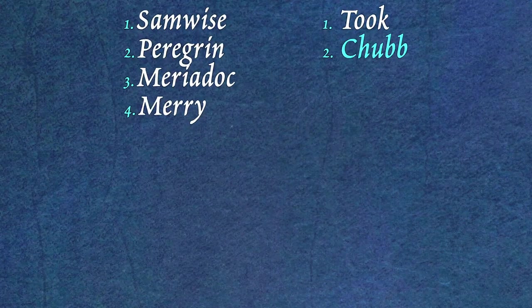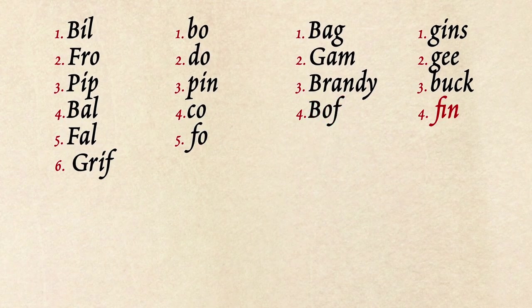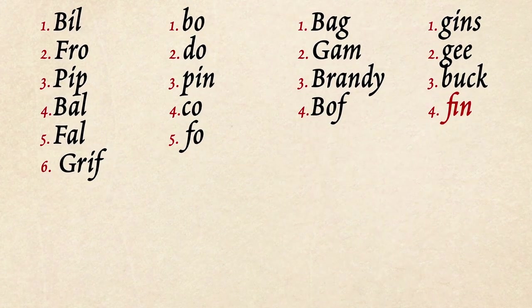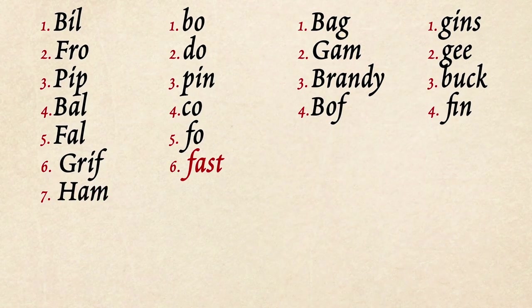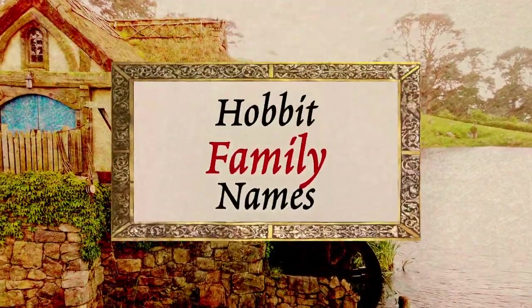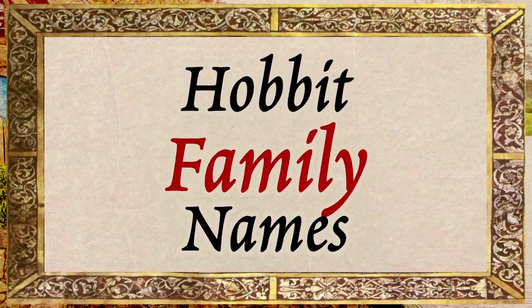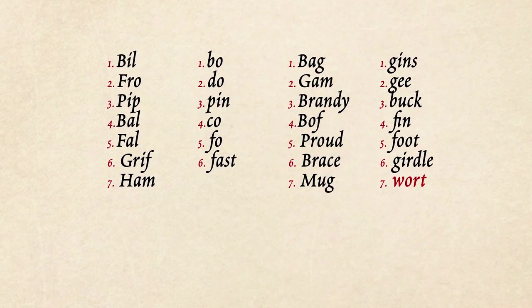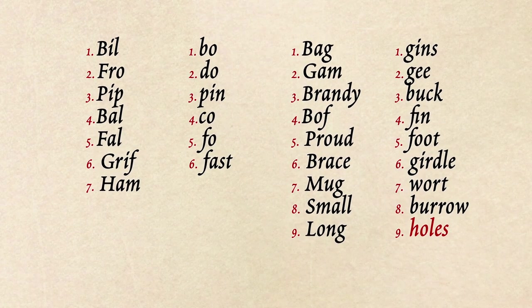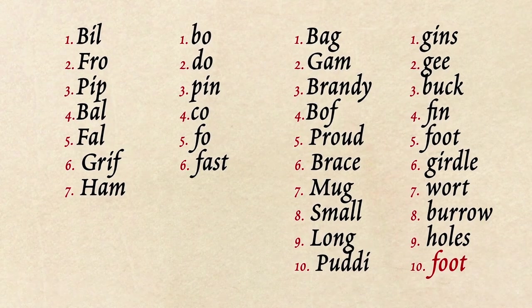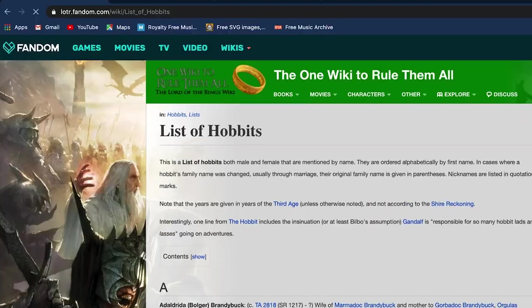I really liked the look of Griffo Boffin, so I split that into four syllables. I also really liked Hamfast Gamgee, so I split Ham and Fast. There were a number of hobbit family names that worked really well, such as Proudfoot, Bracegirdle, Mugwort, Smallburrow, and Longholes. Finally, there was Puttyfoot, but since I already had a foot in column four, I changed it to Toe.